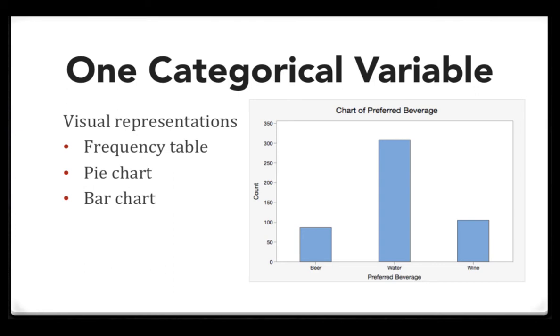Note that in the bar chart, the bars are separated. This signifies that this is a categorical variable. In a few slides, we'll see a histogram which is used for a quantitative variable where the bars touch.